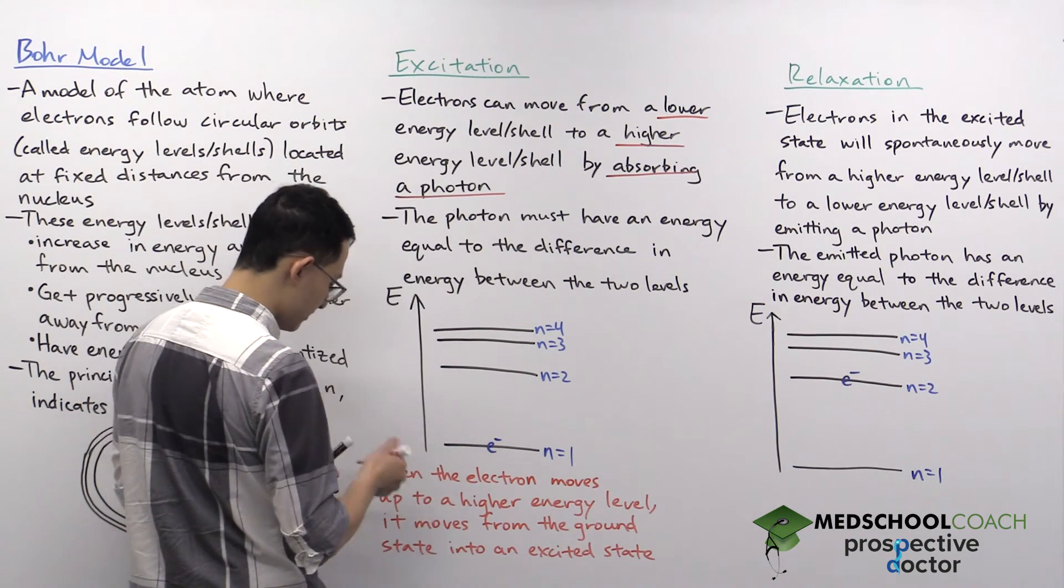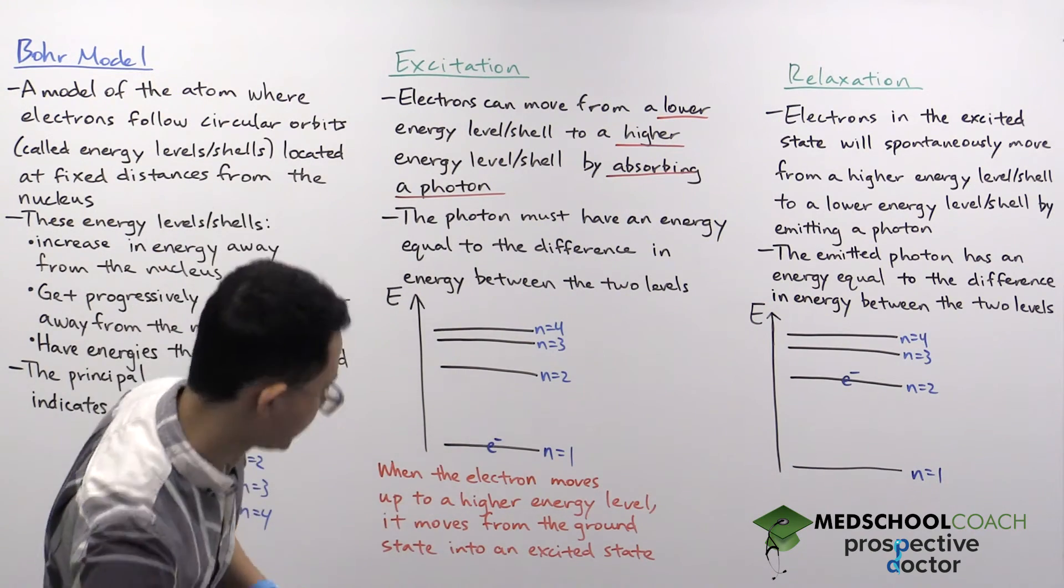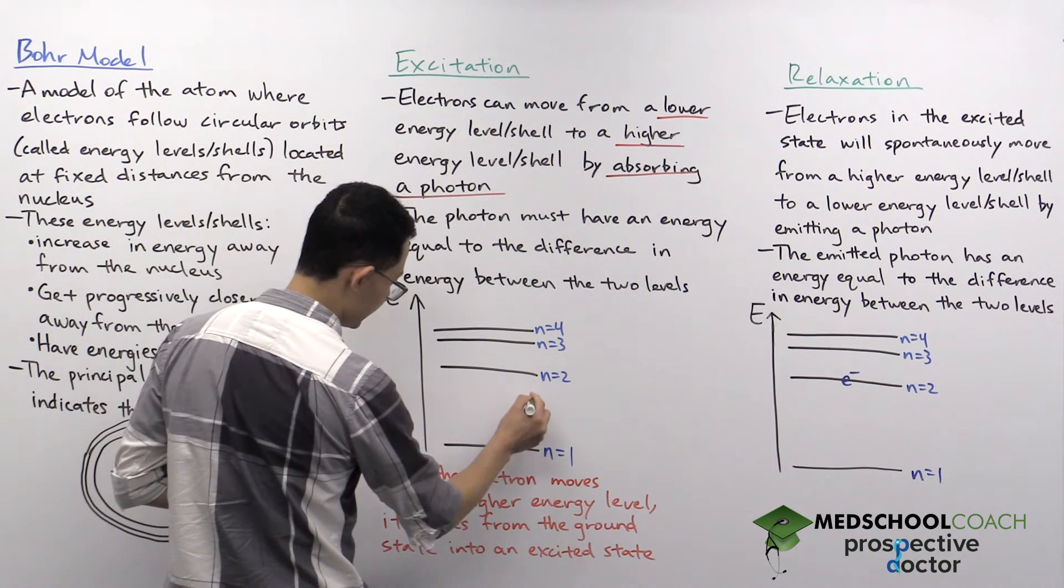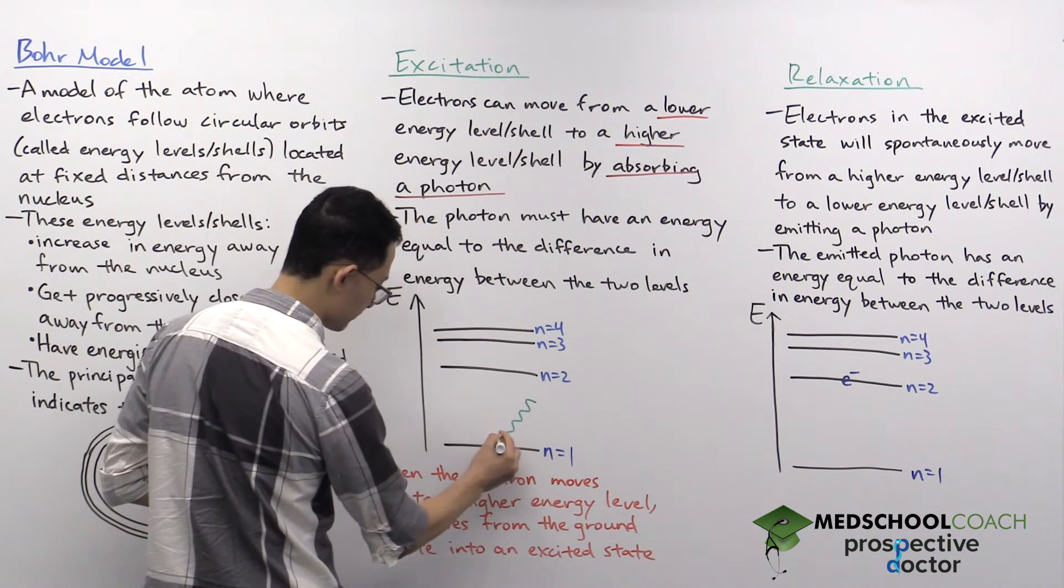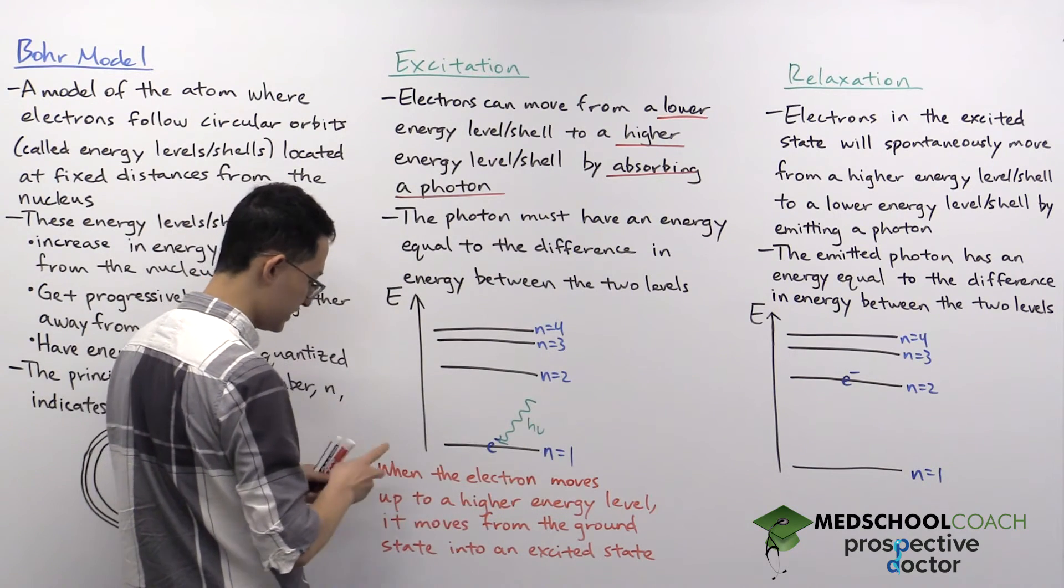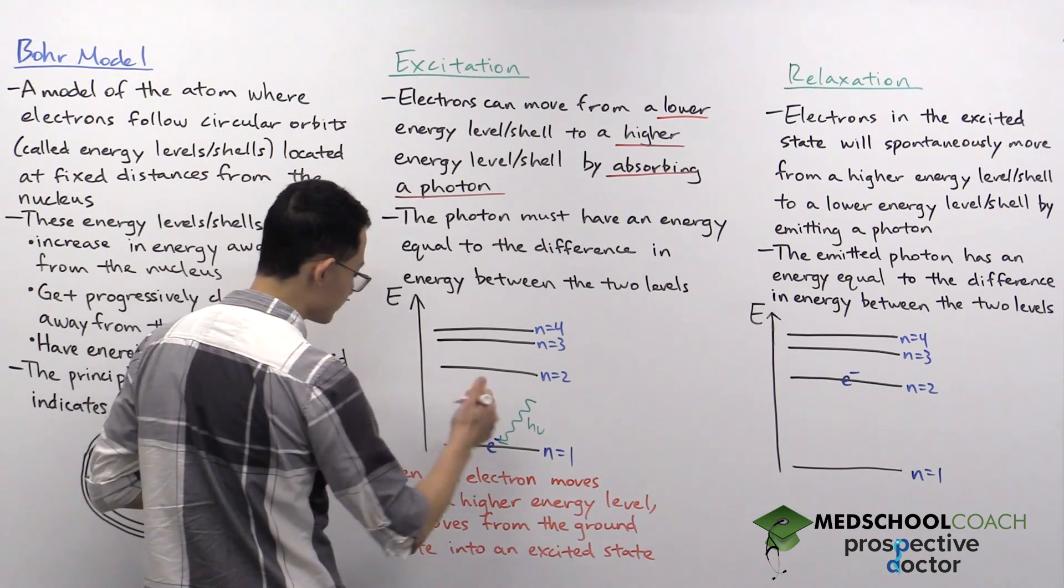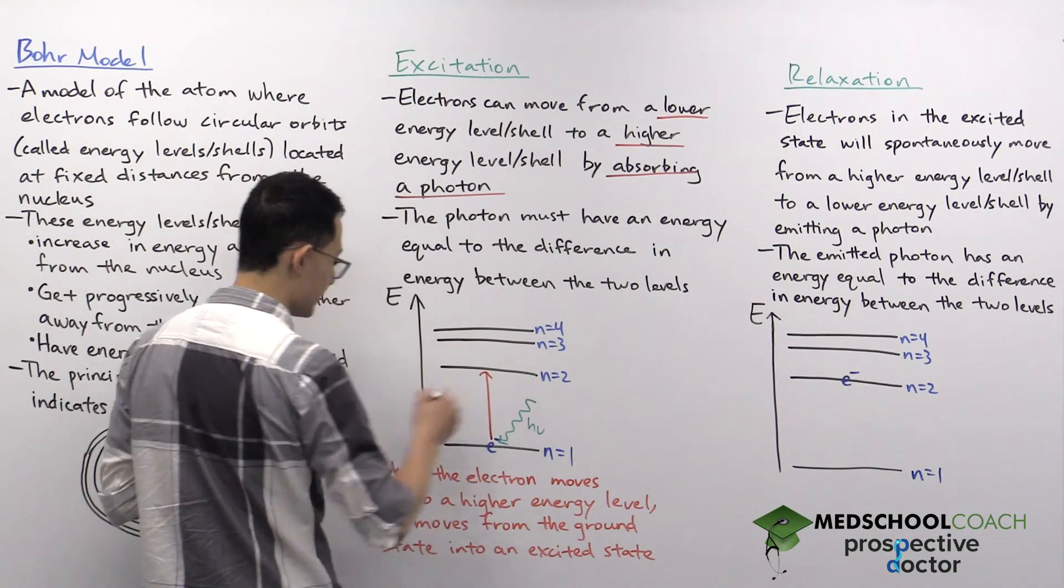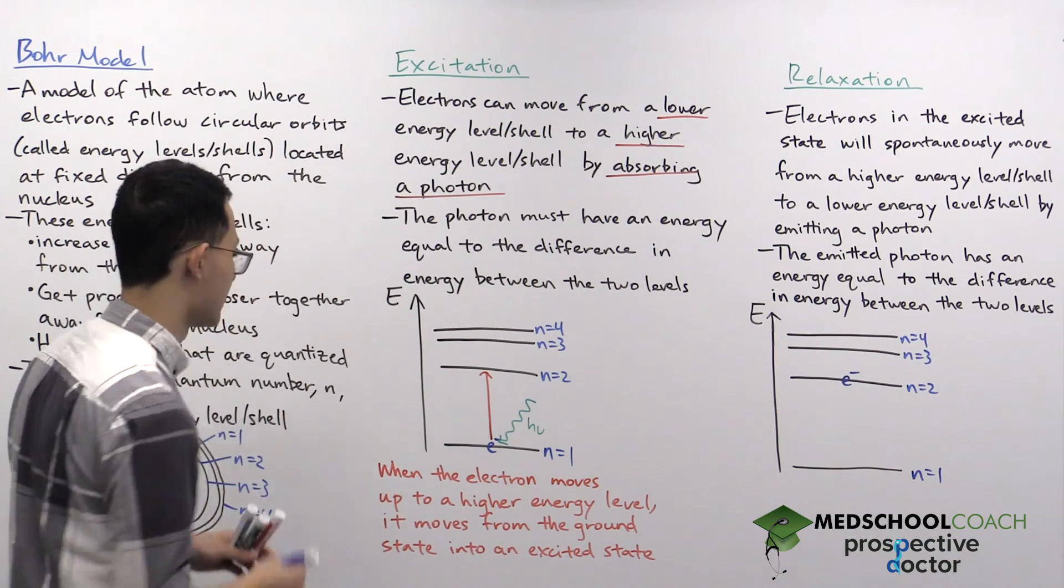So in that case, if you do absorb the right amount of energy, we can go ahead and draw in a photon here, which we're going to denote by the squiggly line, and hν, which we use to denote a photon, and then our electron is able to move up to that next energy level, the N equals two shell.